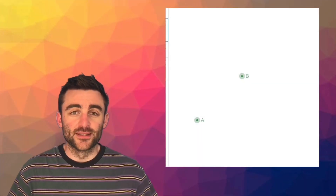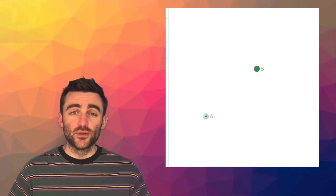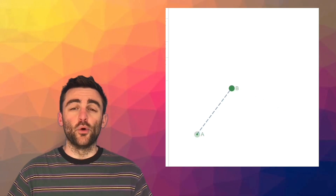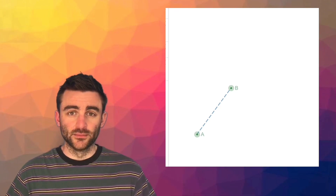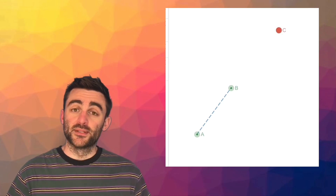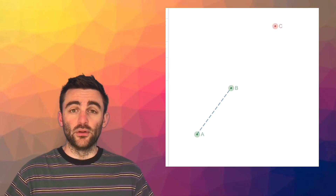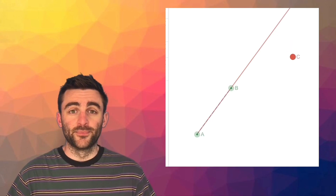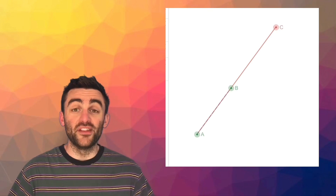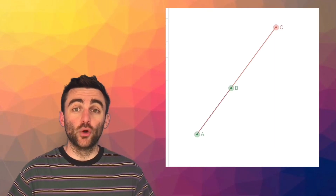Let's imagine we have two coordinate points — no matter where those points are positioned relative to one another, we can always draw one straight line that passes through both. When we add a third point, sometimes we can draw a straight line through all three and sometimes we can't. When three points are such that one straight line can be drawn through all three, those three points are said to be collinear.